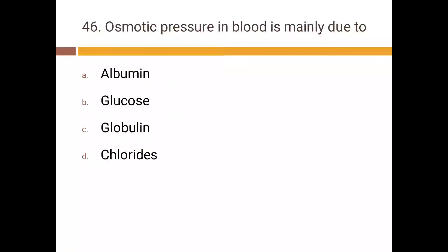Osmotic pressure in blood is mainly due to: a) albumin, b) glucose, c) globulin, d) chloride. Correct answer is a) albumin.